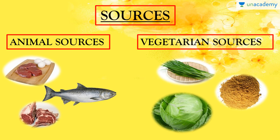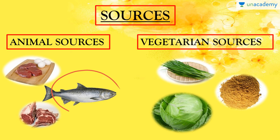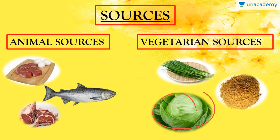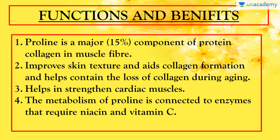Talking about sources: animal sources mainly include beef, meat, eggs, and fish, while vegetarian sources include green leafy vegetables, cabbage, and whole grains. So these are all the good sources of proline.